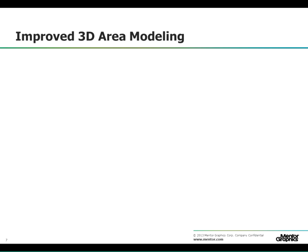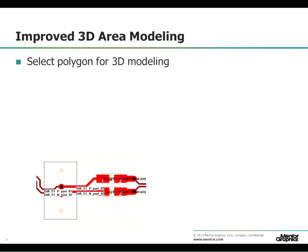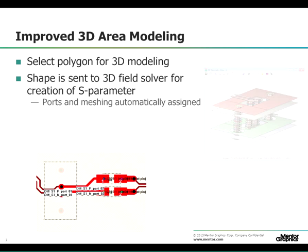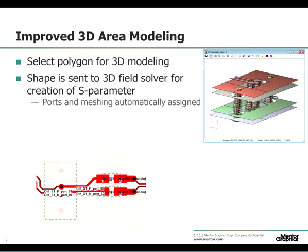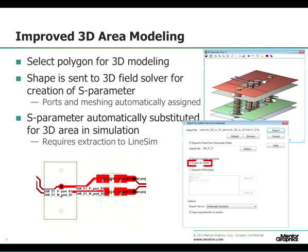3D area modeling has also been improved. You can select an area of a net and send it to the 3D field solver with ports already assigned for S-parameter creation. Once the S-parameter model is created, it gets substituted back into the net for simulation when the net is exported to LineSim, including the 3D areas.